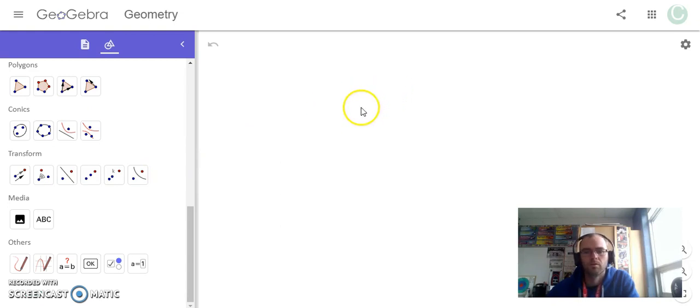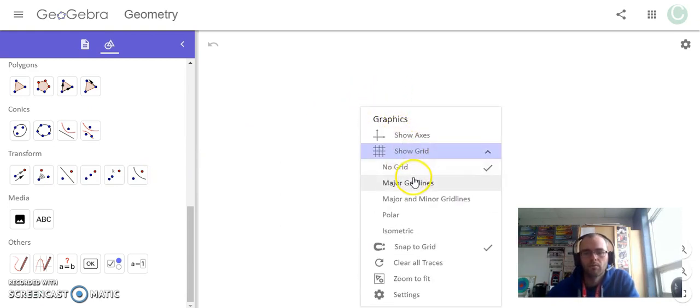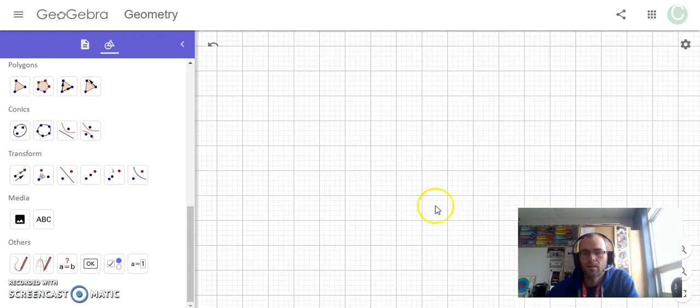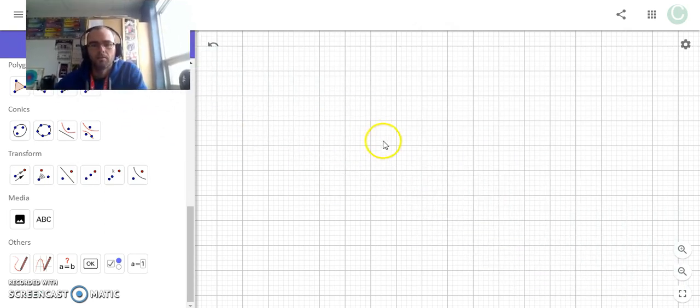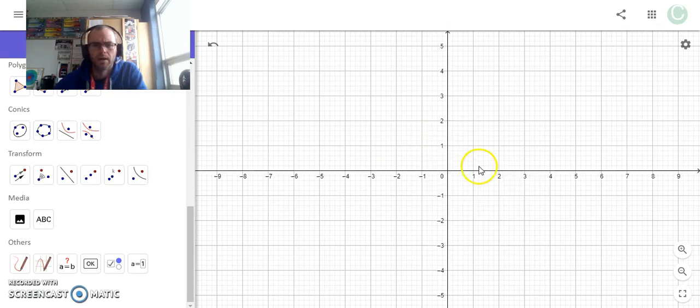I'm also going to right-click and show my grid. I want both major and minor grid lines. And I also want to show my Cartesian plane or coordinate grid.